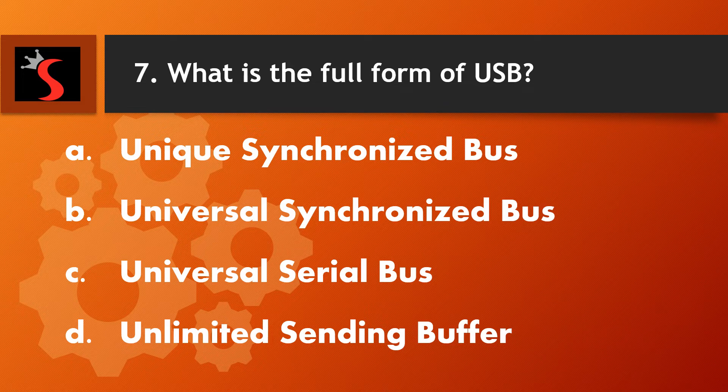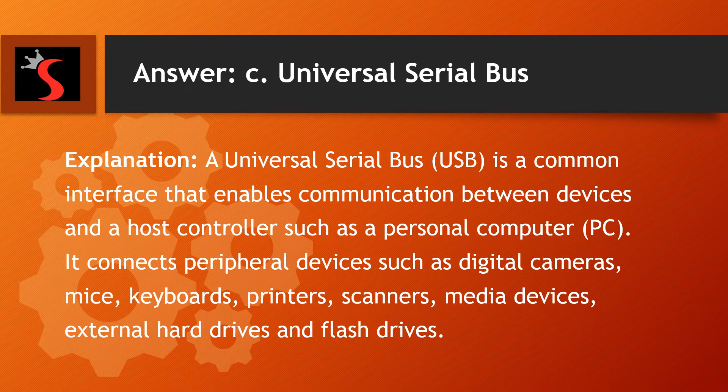The seventh question is: what is the full form of USB? A. Unique Synchronized Bus. B. Universal Synchronized Bus. C. Universal Serial Bus. Or D. Unlimited Sending Buffer. The right answer is Universal Serial Bus. Explanation: a Universal Serial Bus is a common interface that enables communication between devices and a host controller, such as a personal computer. It connects peripheral devices such as digital cameras, mice, keyboards, printers, scanners, media devices, external hard drives and flash drives.